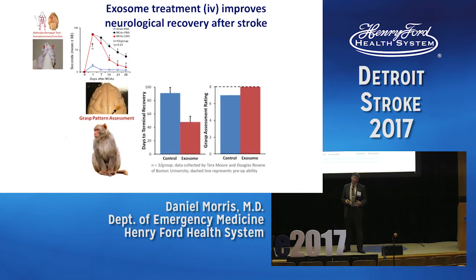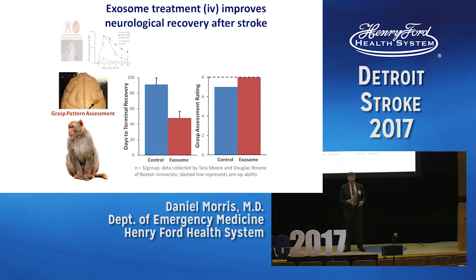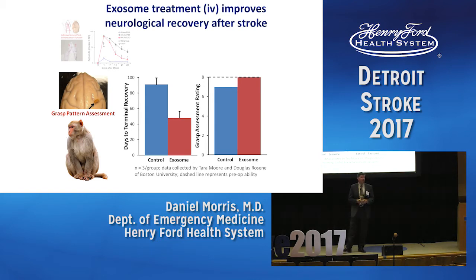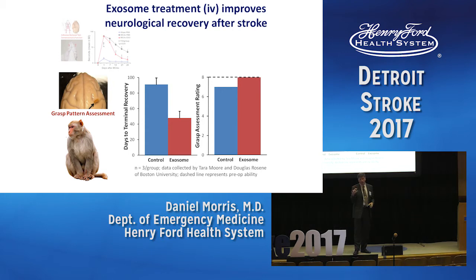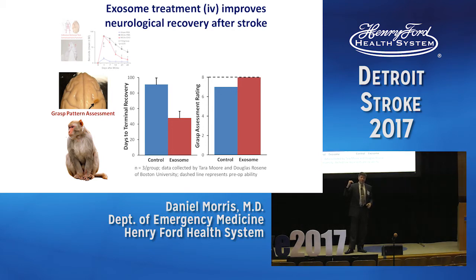For those saying a rat's just a rat — this was also done in a primate model at Boston University by Tara Moore and Doug Rosen. They have a primate model where they can stereotactically induce a stroke specifically affecting the monkey's hand, giving him a deficit. They then administered these exosomes, and from the graphs you can see that recovery occurred twice as fast and pretty much back to baseline.